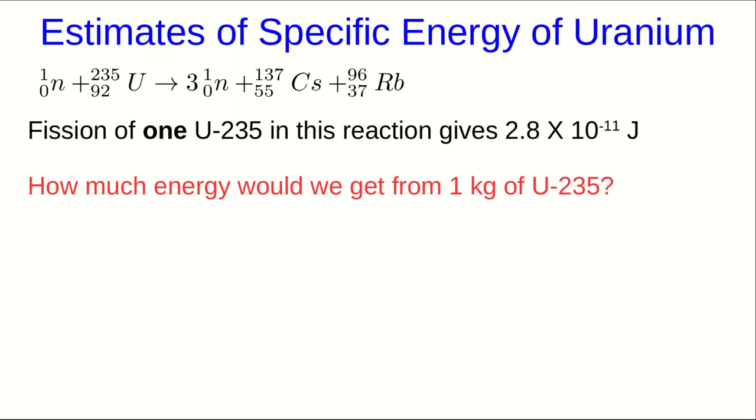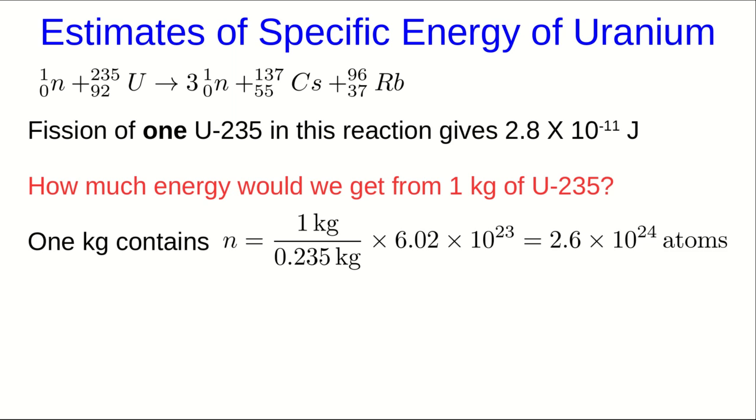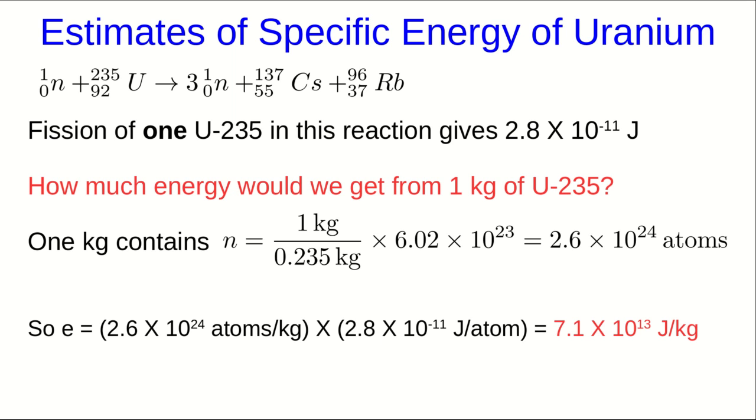So how much energy would we get from a kilogram of U235? Well, we can use the molar mass, 235 grams per mole, to get the number of atoms in a kilogram, and then just multiply that by the energy per atom, and we get a specific energy of order 10 to the 13 joules per kilogram, which is about a million times the specific energy of a fossil fuel.